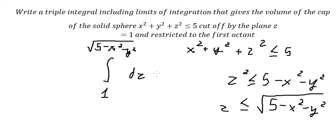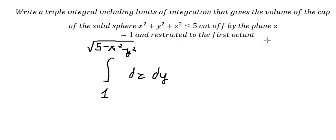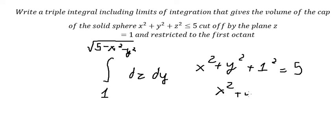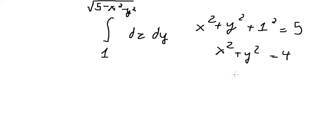Now let's find the bounds for dy. We substitute z equal to one into the surface equation. We have one squared less than or equal to five, and on the surface when z equals one we get five minus one equals four. So we need to work with x squared plus y squared equal to four.